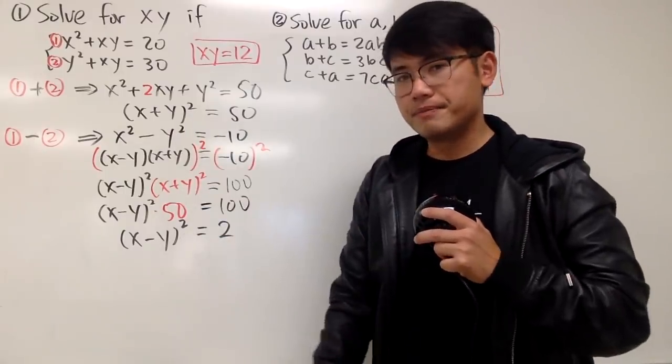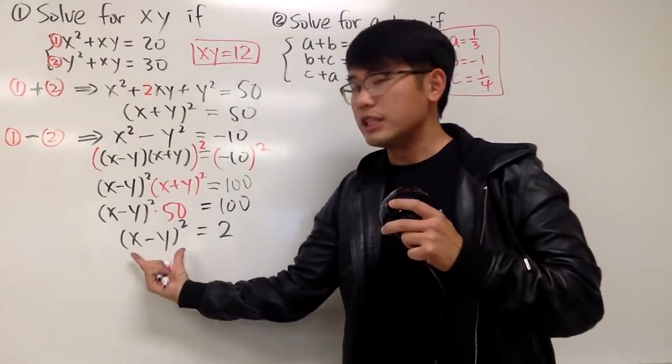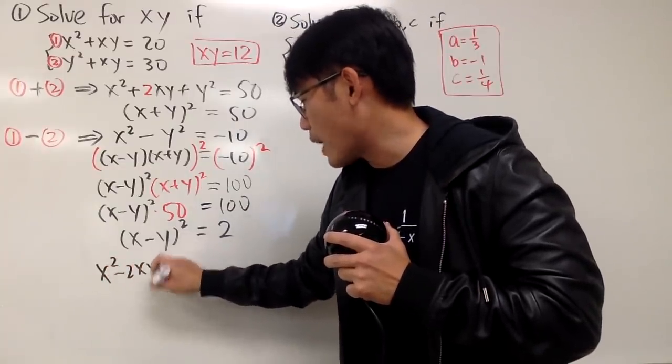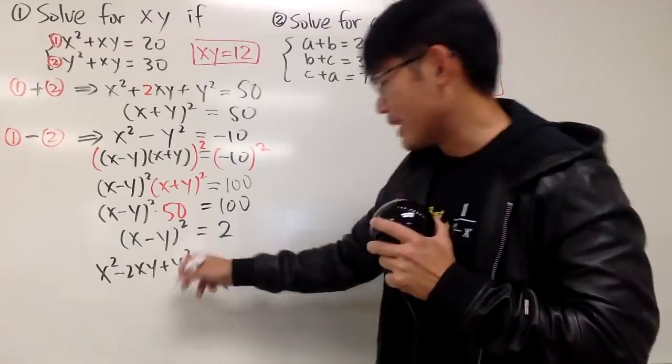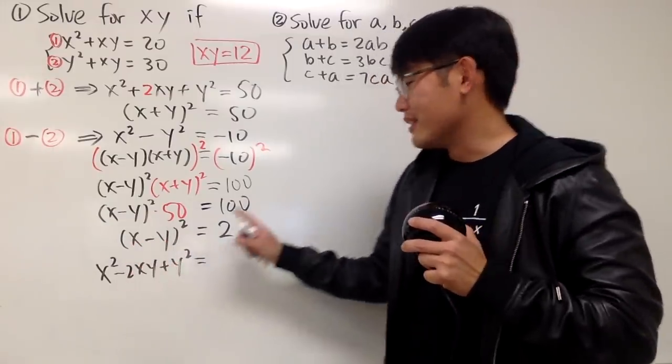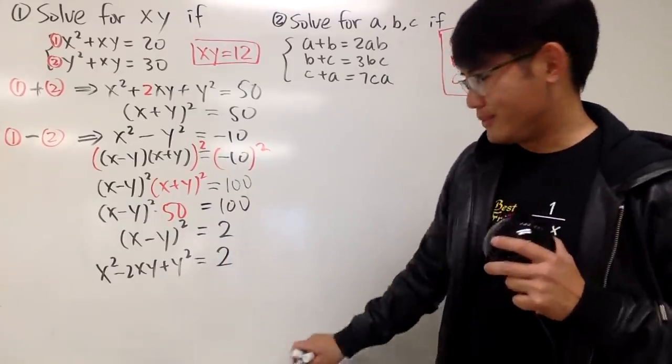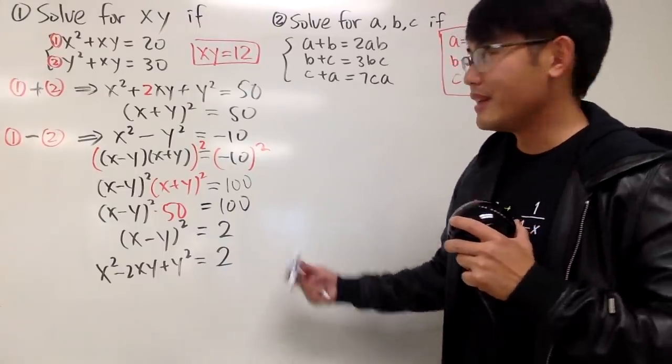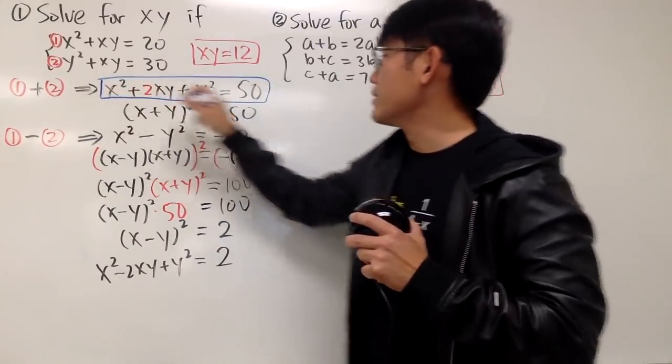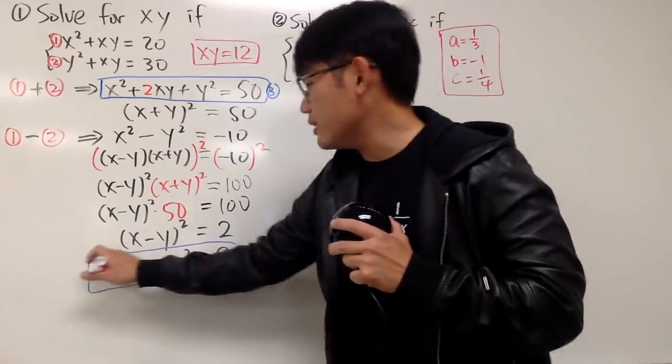When we square both sides, we will get this right here being x minus y squared, and this right here is just x plus y squared, and that will be 50 in a second, but let me write it down on the right-hand side for you guys. Negative 10 squared is equal to positive 100. And now, let me put a 50 right here for the x plus y squared, so we get x minus y squared times 50 equals 100. And of course, we can divide the 50 on both sides, and we get a very similar expression, namely x minus y squared being equal to just a 2 right here.